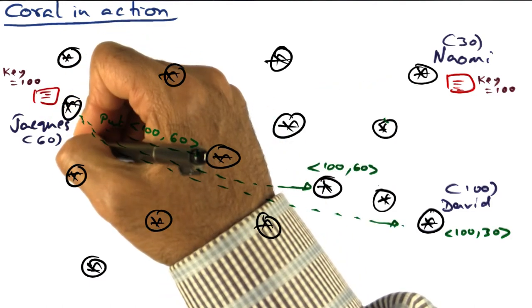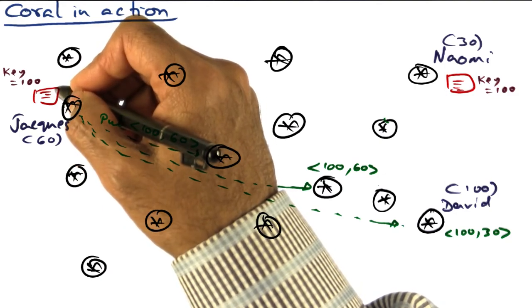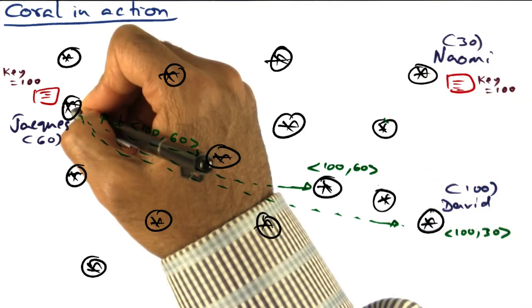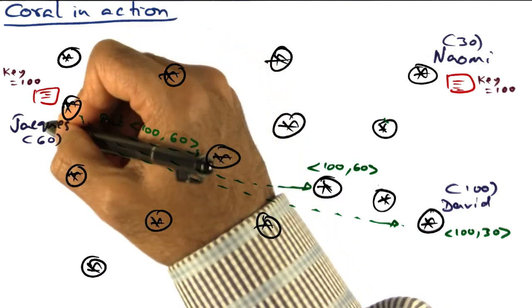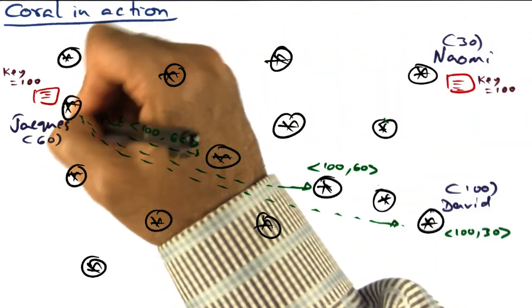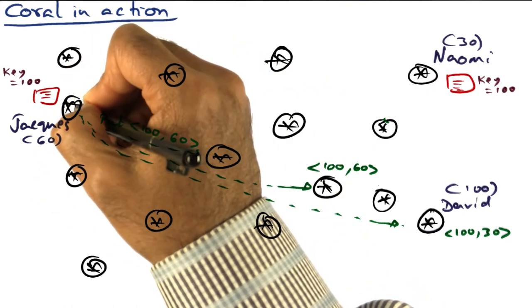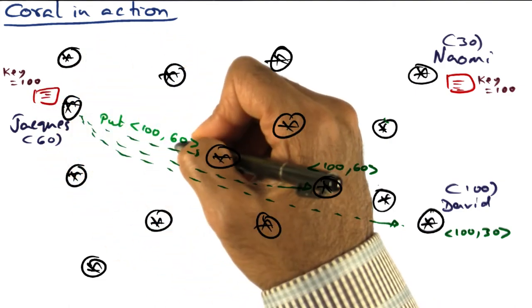But Jacques is a nice guy too. So he says, well, I have the content, since I have the content, I can also serve as a proxy for Nomi. And what I'm going to do is I'm going to put the key value pair 100 corresponding to this content that is now mirrored over here, and say that the value is 60 indicating that I'm willing to serve as a proxy for the same content. So I'm going to do a put operation.